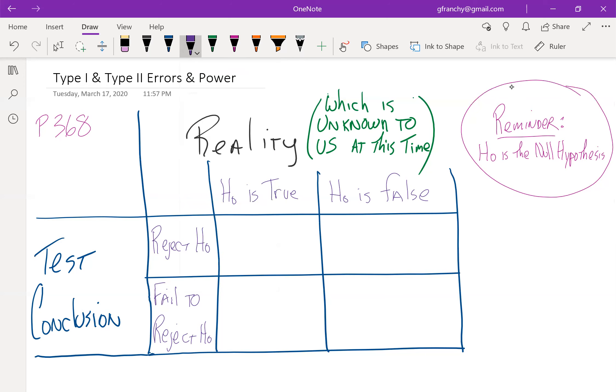And if the null hypothesis is true and we fail to reject that, we're happy campers because we would have made what would turn out to be the right decision.